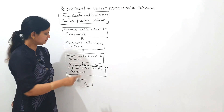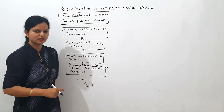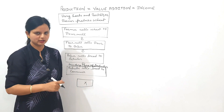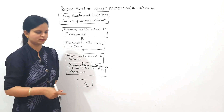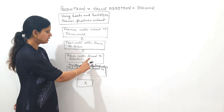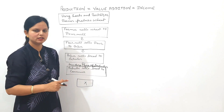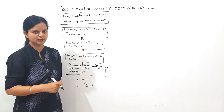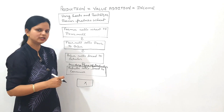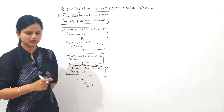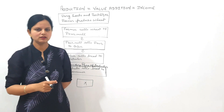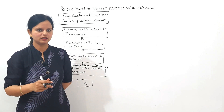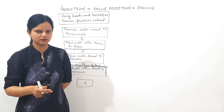Did the baker sell all the bread to the retailer? The answer is no — the baker keeps some bread for self-consumption. So, production for self-consumption will be deemed as final consumption expenditure.